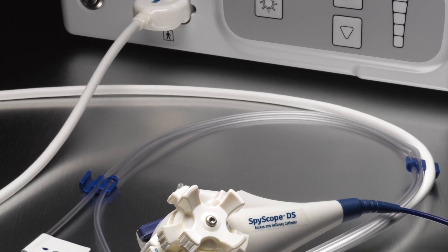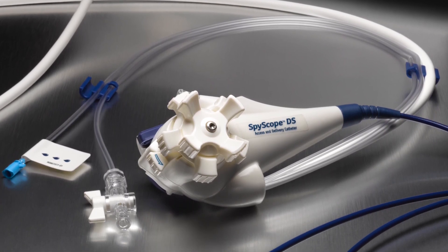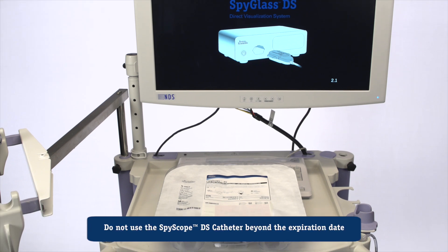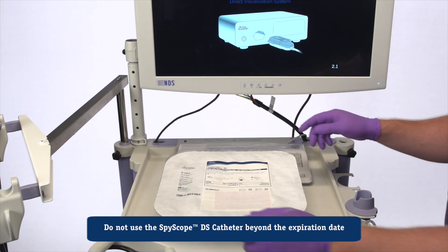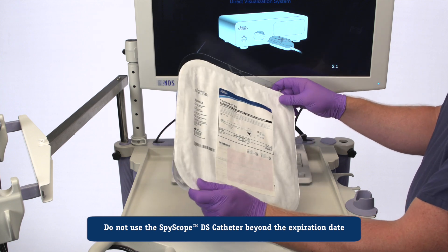During endoscopic procedures in the pancreatic obiliary system, including hepatic ducts. Setting up Spyscope DS: Ensure the sterile packaging is intact. If the packaging shows any type of damage, do not use the Spyscope DS catheter.